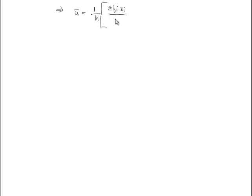We know that sigma fi xi by sigma fi is x bar. Hence we can write it as u bar is equal to 1 by h into x bar minus A, as sigma fi by sigma fi cancels.